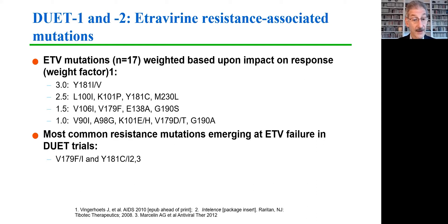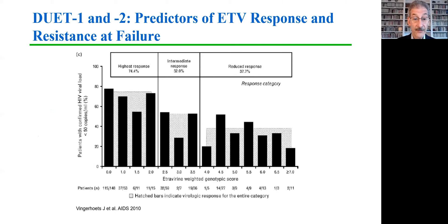A 181I or V mutation gave a weighting factor of 3, and the 181C gave a factor of 2.5. If we look at how these factors contributed to virologic response, participants whose etravirine weighted genotype score was 2 or less had the highest response rates of about 75% achieving full virologic suppression. Those with scores between 2.5 and 3.5 had about a 52% response rate, and those with a higher weighted score had only about a 38% response — really not much different than placebo.